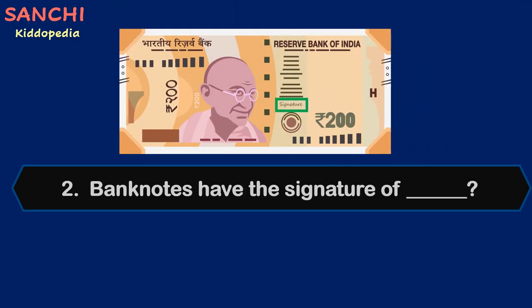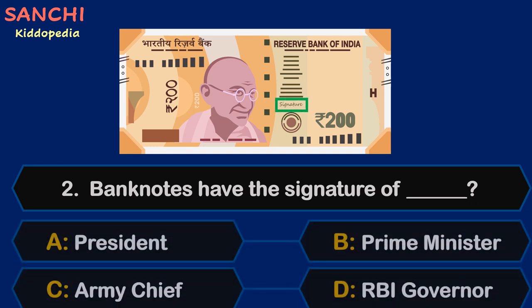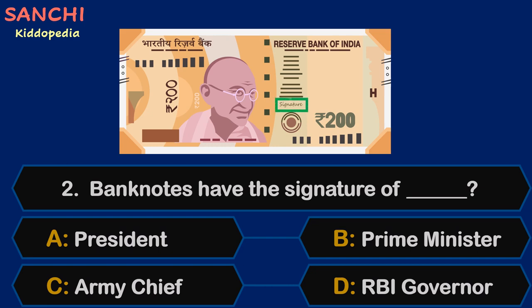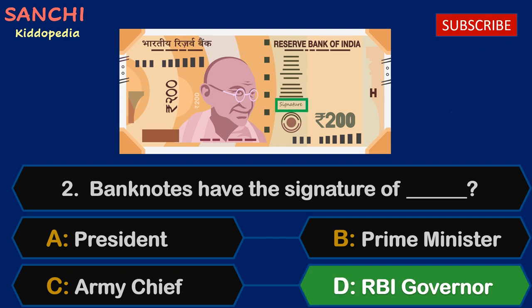Question 2. Bank notes have the signature of — your options are: A. President, B. Prime Minister, C. Army Chief, or D. RBI Governor. The time starts now. And the answer is D. RBI Governor.